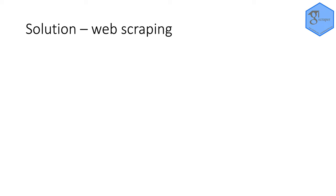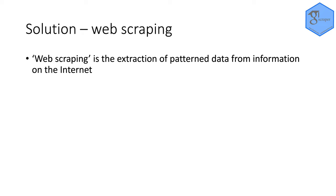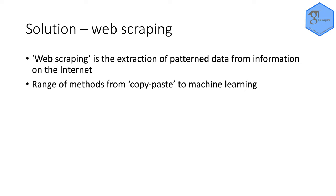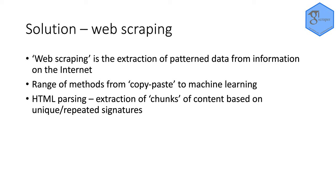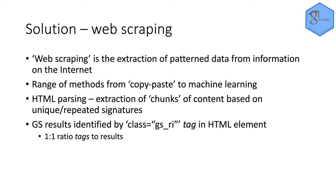One of the solutions to these kinds of problems with grey literature is web scraping, which is the extraction of patterned data from information on the internet. There's a range of different ways of scraping information, from the human-driven copy-paste to more technical machine learning type approaches, but the most common perhaps is HTML parsing, in which you extract chunks of content based on unique or repeated signatures in the HTML code.